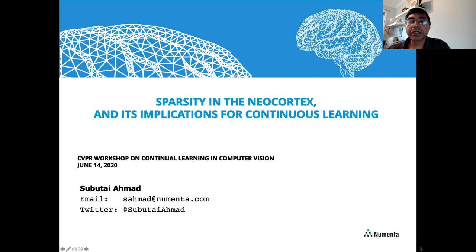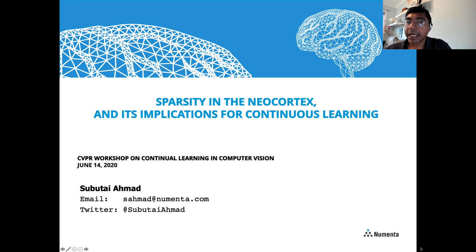Hi, everyone. My name is Subutai Ahmed. I'm a researcher at Numenta, which is a small research lab located in Redwood City in the San Francisco Bay Area in California. My talk today is going to be somewhat unusual in that I'm going to discuss how neuroscience can help us design better continuous learning systems. In particular, I'm going to focus on sparsity in the neocortex and its implications for continuous learning.